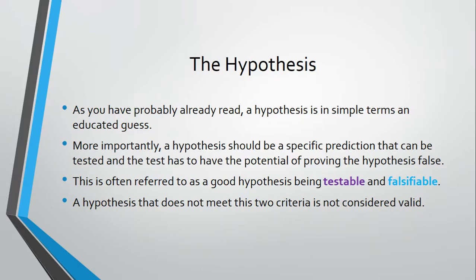Now, this is often referred to as a good hypothesis being both testable and falsifiable. Testable meaning that you could physically create a test for this. Falsifiable meaning that the prediction you've made could potentially be wrong and could be proven wrong by the experiment itself.